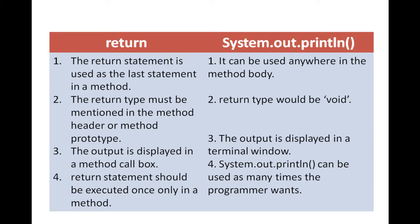For System.out.println, the return type would be void. The third difference is the output is displayed in a method call box for the return type, whereas for System.out.println the output is displayed in a terminal window. And the last difference is the return statement should be executed only once in a method, but System.out.println can be used as many times as the programmer wants.